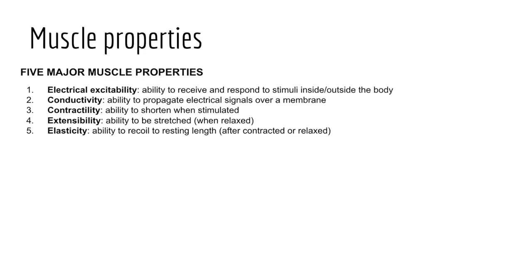Next, muscle tissue has extensibility — the ability for muscles to stretch without being damaged. For instance, in order to flex the knee, the extensor muscles, that is the muscles of the quadriceps — the rectus femoris, vastus lateralis, vastus intermedius, and vastus medialis — must extend to allow for knee flexion to occur. Finally, muscle tissue has elasticity, or the ability to recoil and return to its original length and shape after contraction or extension.